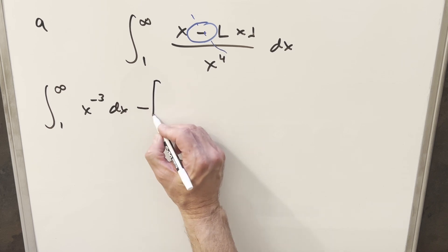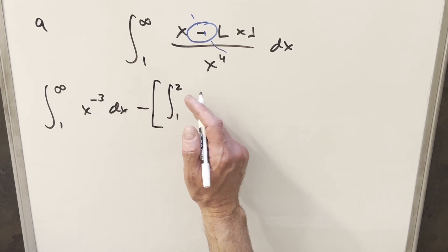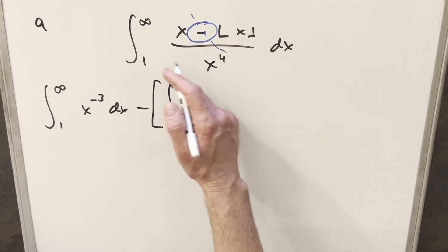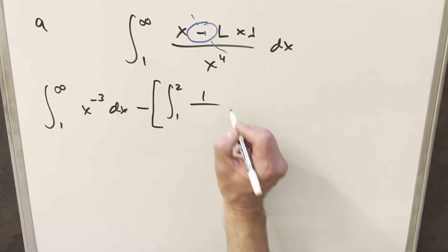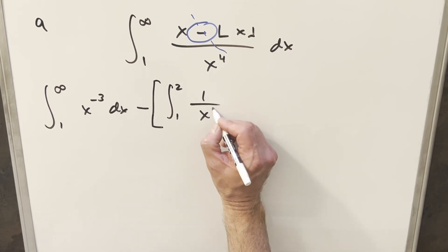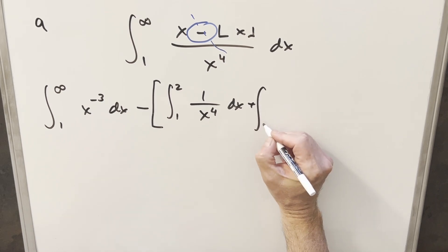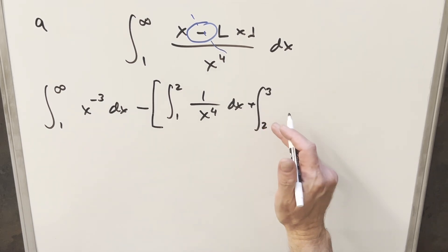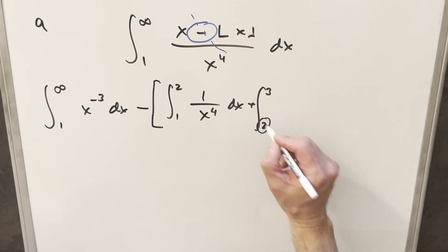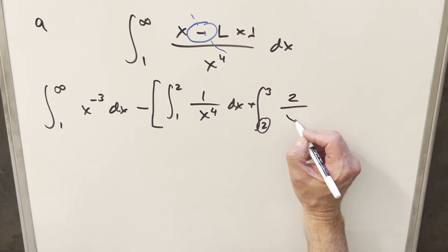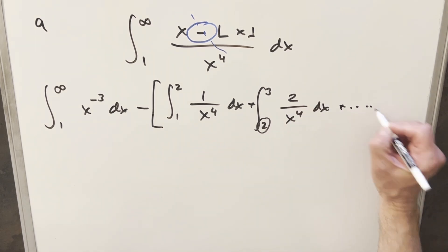I'm going to break this up into multiple integrals. For the first one, we'll go from one to two. Between one and two, the floor function rounds us down to the next integer, which is just one. So this first piece becomes one over x to the fourth dx. For the second one, we go from two to three, and the floor is always going to round us down to two. So this becomes two over x to the fourth.